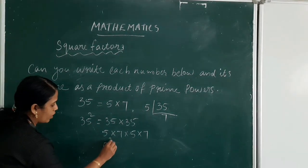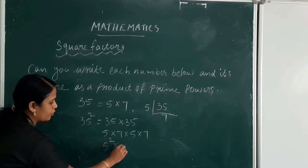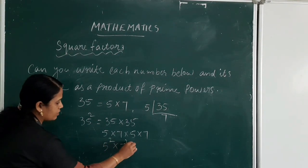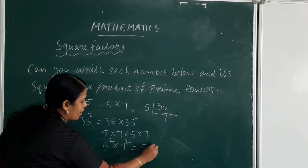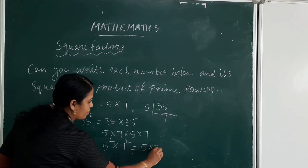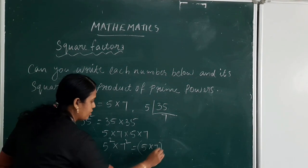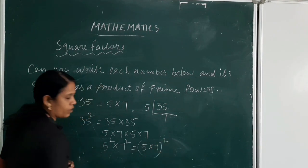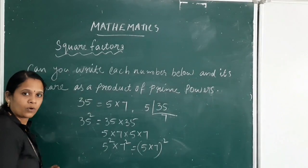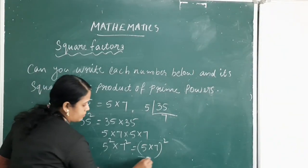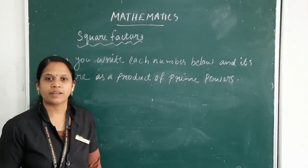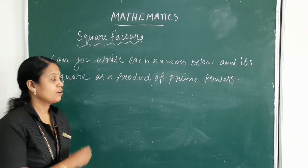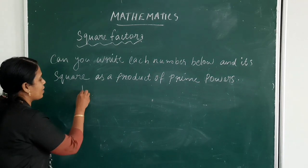So 35² = 5² × 7², which equals (5 × 7) whole square. Next one is 45.